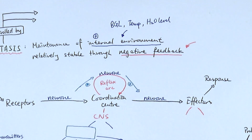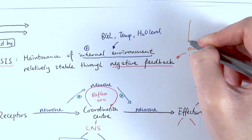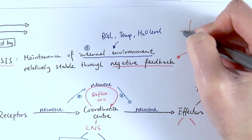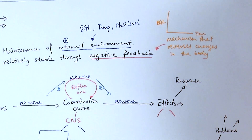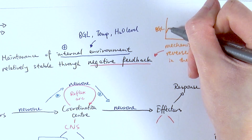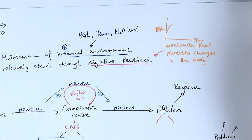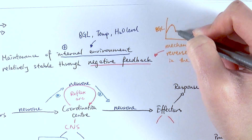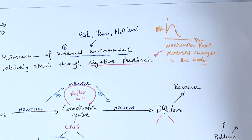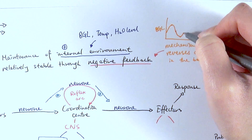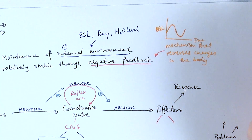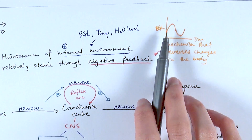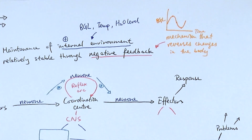Negative feedback is a mechanism that works to reverse any changes experienced by the body. For example, if you draw a graph with time on the x-axis and blood glucose level on the y-axis — after a meal your blood glucose increases, so the body releases insulin to bring it back down. If you haven't eaten, blood glucose drops, so the body releases glucagon to bring it back up. This fluctuating graph represents negative feedback. Positive feedback also exists — for example in childbirth and blood clotting — but for homeostasis it's mainly negative feedback.